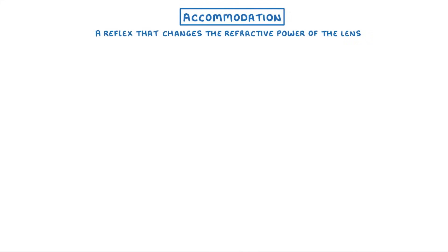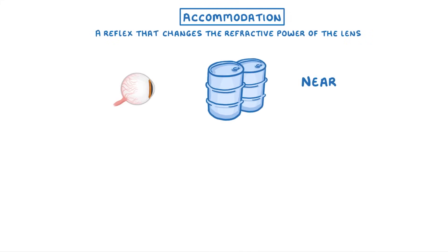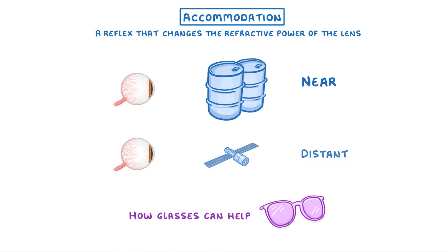In this video, we're going to look at the process of accommodation, which is a reflex that changes the refractive power of the lens so that you can see both near and distant objects. We'll also cover how glasses can help when this process doesn't work properly.